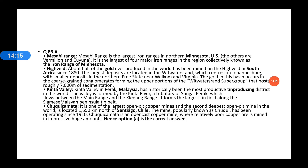Highveld: about half of the gold ever produced in the world has been mined in the Highveld of South Africa. The largest deposits are located in the Witwatersrand basin, which is centered on Johannesburg, with smaller deposits in the northern Free State near Welkom and Virginia. The gold occurs in coarse-grained conglomerates forming the upper portion of the Witwatersrand Supergroup, hosting roughly 7,000 meters of soft sedimentary rock.